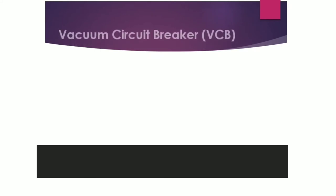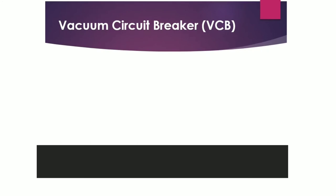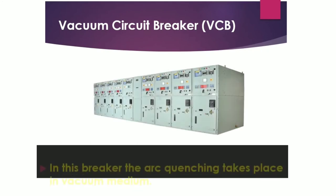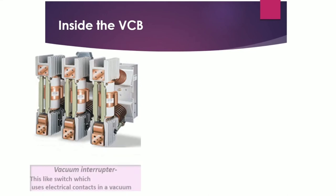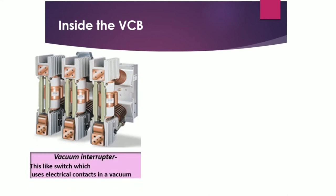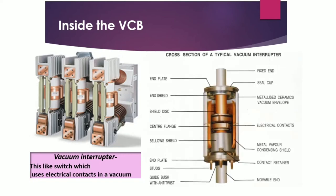The vacuum circuit breaker (VCB) performs arc quenching in a vacuum medium. Inside the VCB there is a vacuum interrupter, which acts like a switch used for making and breaking electrical contact in a vacuum. In a cross-section of a typical vacuum interrupter, the upper portion is the fixed end and the lower portion is the movable end.